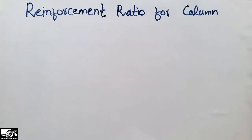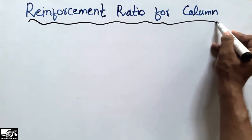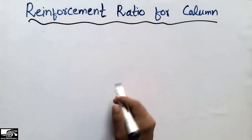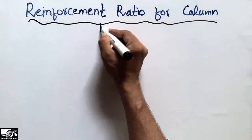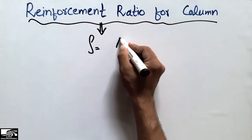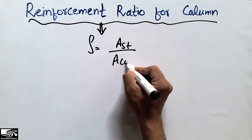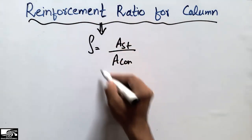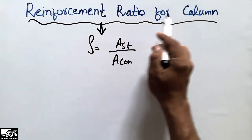Hello guys, welcome back to the C1 Engineering YouTube channel. Please subscribe for daily C1 Engineering videos. Today our lecture is about the reinforcement ratio for the column. The reinforcement ratio can be defined as the ratio of the area of the steel to the area of the concrete. This ratio is known as the reinforcement ratio.